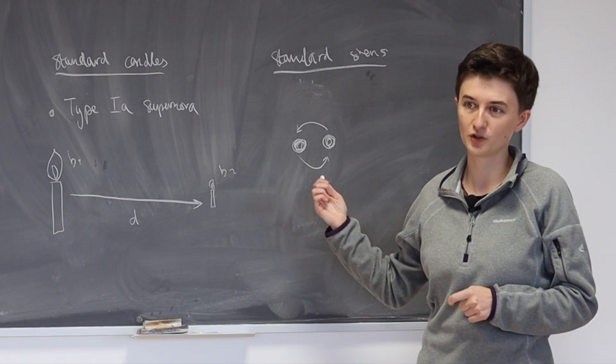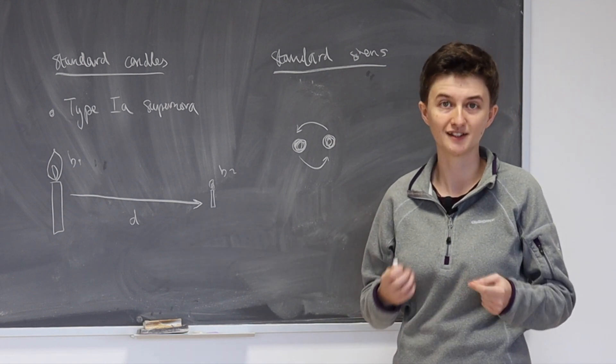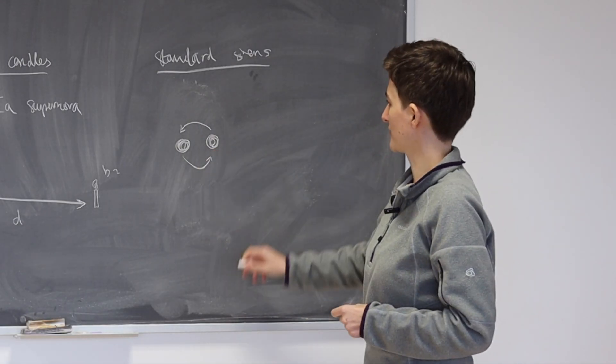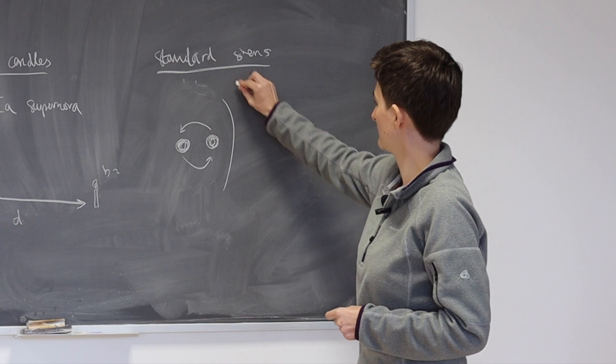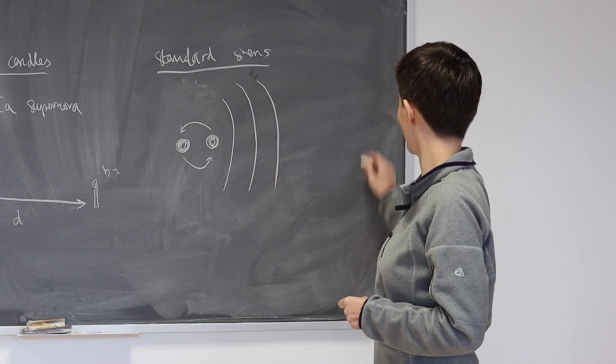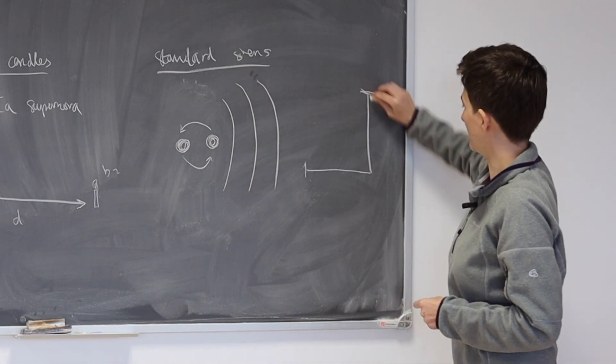Now they're not particularly strong, you can't feel them with your body, but we can detect them in very sensitive detectors that we have on Earth. So we can imagine we've got these two neutron stars merging together, and they're going to emit some gravitational waves. Obviously this is not to scale, and then they're going to arrive in our detector here on Earth.